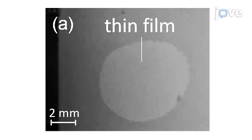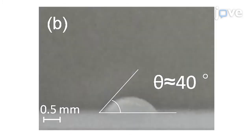In this top view of a bare lithium niobate surface, one microliter of ethanol has spread to a thin film. In contrast, this side view of a coated device surface demonstrates the formation of a droplet.